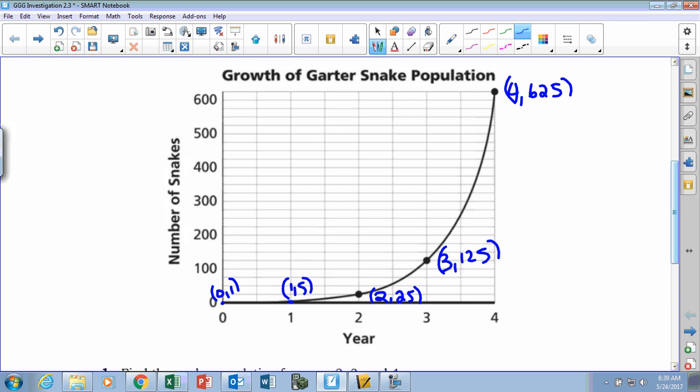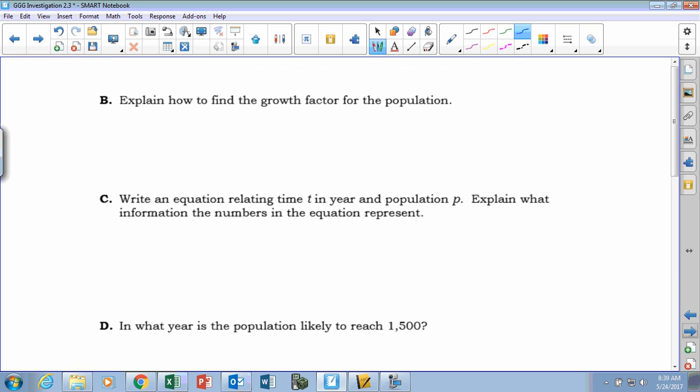Again, how do we find the growth factor? If the x's are going up by ones, right, we look for the change of y. And the change of y is times five. So five is the growth factor because y is multiplied by five as x increases. That's our constant rate, not rate of change. Don't get that mixed up.